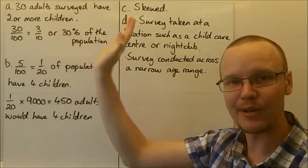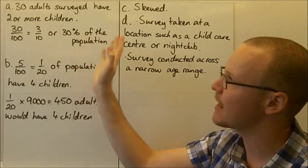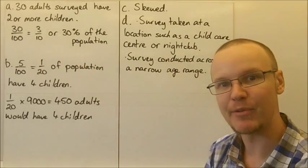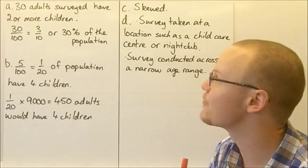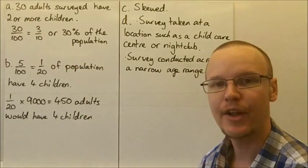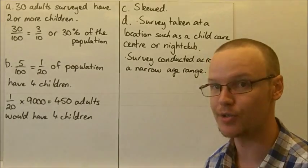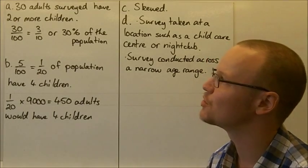So if we're looking at the adults that have two or more children, there were 15 that had two children, 10 that had three children and five that had four, so that's 30 adults. 30 adults out of the 100 total said they had two or more children.